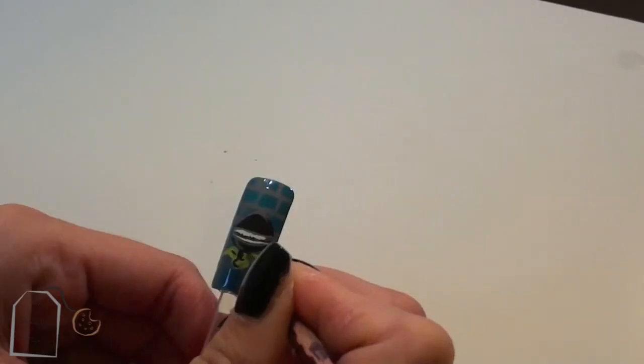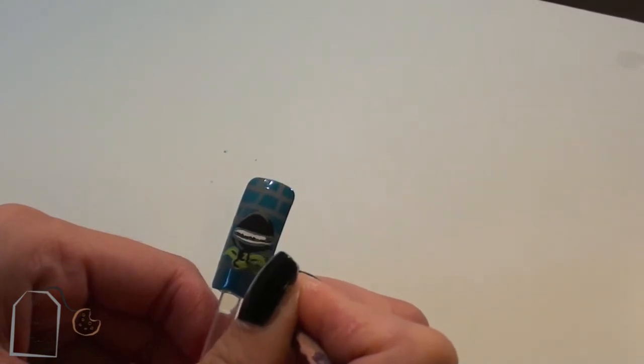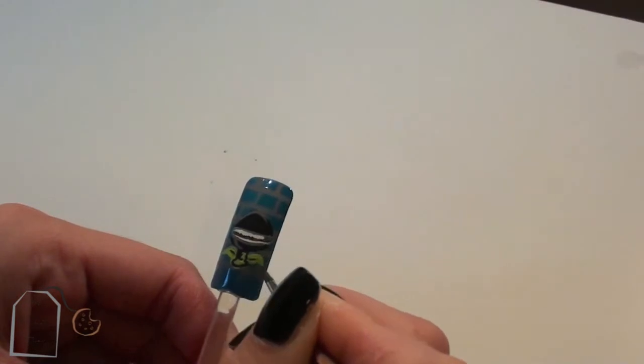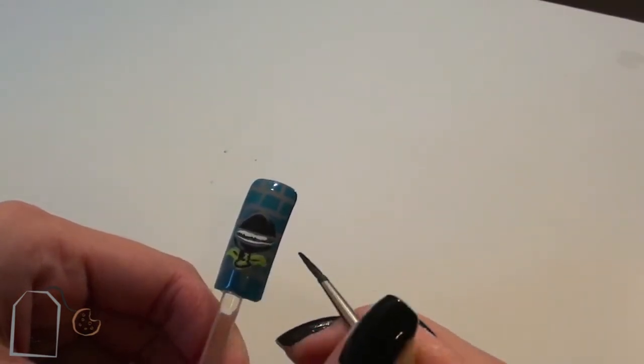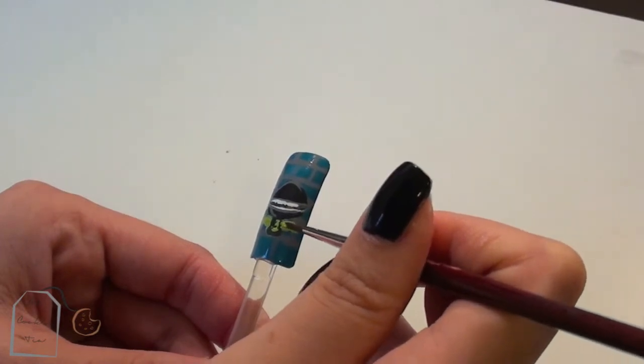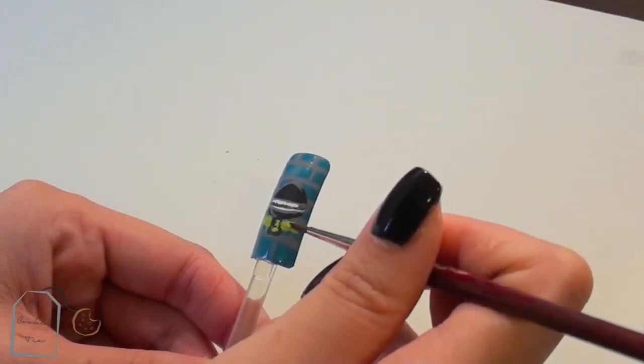Next I'm going to take the same green paint and mix it in with some black to create a darker green, and go ahead and add some shadows on the stem as well as the leaves. I blended out the dark lines on the leaves to create more of a softer shadow.